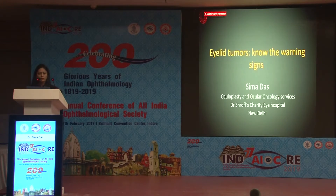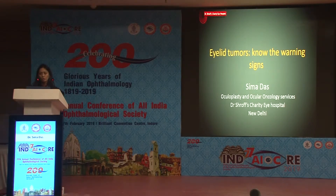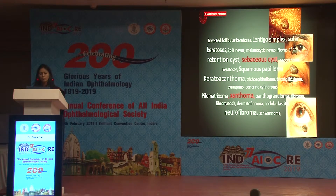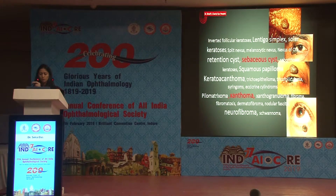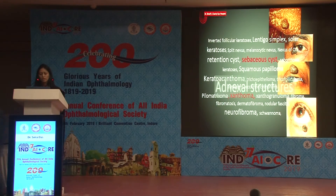I will start the course with eyelid tumors. Basically, how do we know the warning signs of malignancy if we see an eyelid mass? Eyelid tumors can arise from various structures, starting from the epidermis of the skin right to the conjunctival layer. There are adnexal structures in the eyelid from which tumors can also arise. Many of them are benign, but some can be malignant.